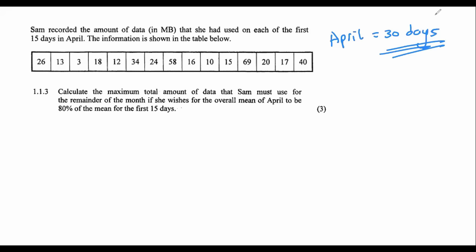It says calculate the maximum total amount of data that Sam has used for the remainder of the month, if she wishes for the overall average for April to be 80% of the mean for the first 15 days. Let's break this down into basics. They want to know if there are another 15 days in April, because there's a total of 30 days.